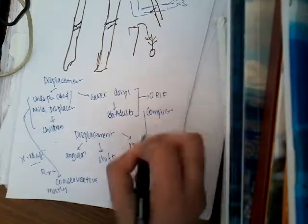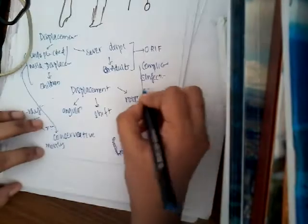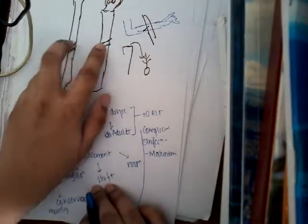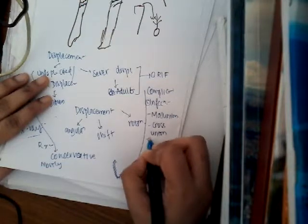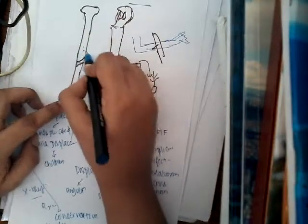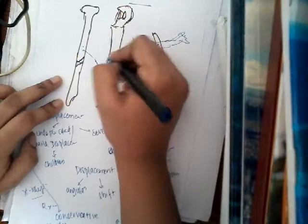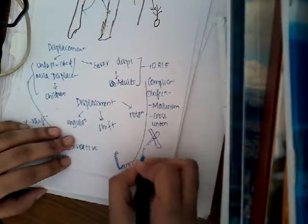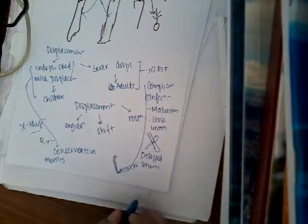Now, complications. There can be infection, and whenever there is infection, it can progress to osteomyelitis. Then there can be malunion — because if both fractures are at the same level, there is a chance of malunion. Sometimes you can even see crossunion, where the proximal fragment of radius fuses with the distal fragment of ulna, and the proximal fragment of ulna fuses with the distal fragment of radius. This is called cross union. There can also be delayed union or malunion. These are the different complications of fracture of forearm bones.